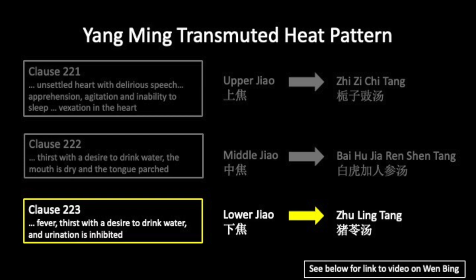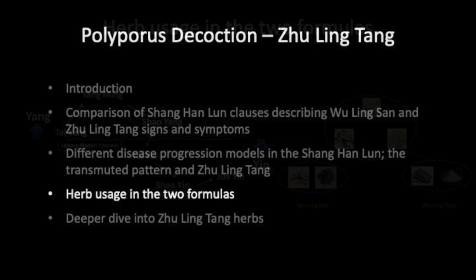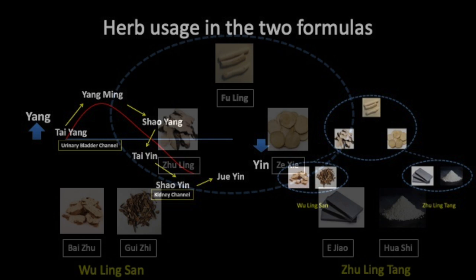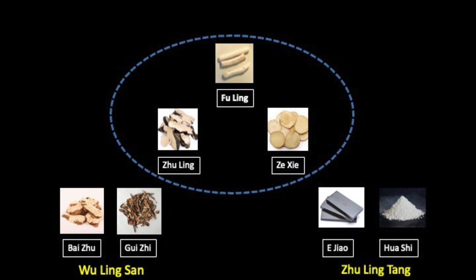So how do the herbs used in these two formulas reflect the disease stage and associated signs and symptoms? Both formulas use Fu Ling, Zhu Ling, and Ze Xie — we'll set these aside to understand the differences. Wu Ling San uses Bai Zhu and Gui Zhi; Zhu Ling Tang uses E Jiao and Hua Shi. Let's review the properties of these four herbs.